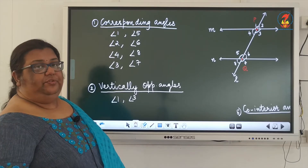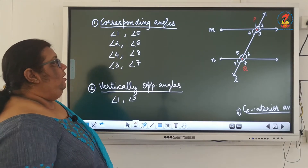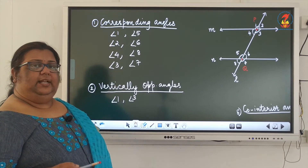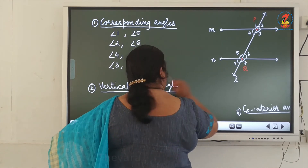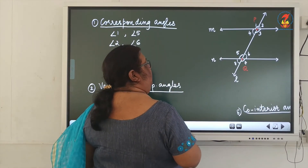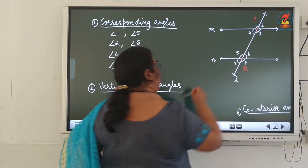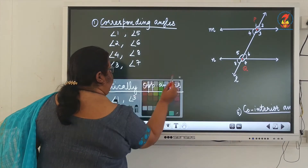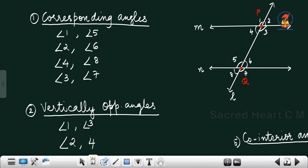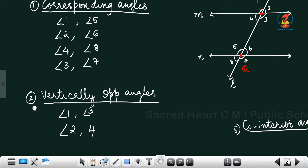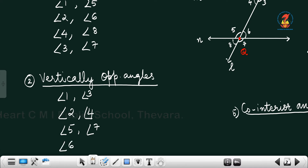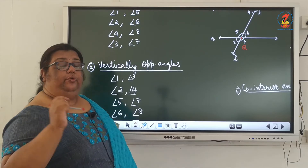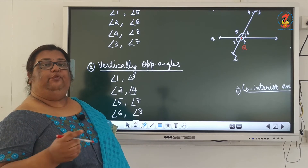Next are vertically opposite angles. When two lines are intersected, a pair of vertically opposite angles are formed. Here, angle 1 and angle 3 are vertically opposite. The other pair is angle 2 and angle 4. Another set of vertically opposite angles will be angle 5 and angle 7, and another pair will be angle 6 and angle 8. So there are 4 pairs of vertically opposite angles.